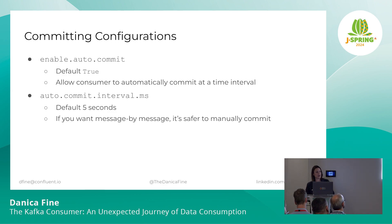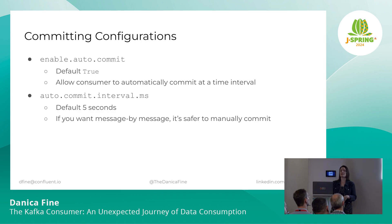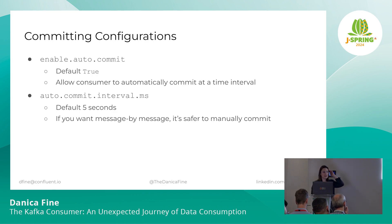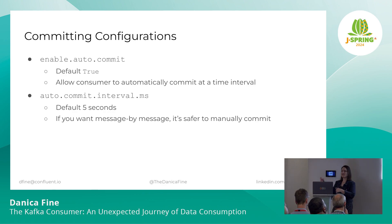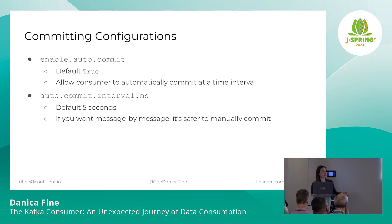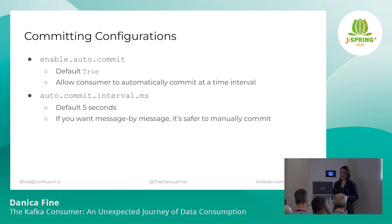As we are processing these fetched and then polled records, we should probably keep track of whether or not we've actually processed that record and made any progress, so that the next time a consumer comes online for this group for this topic partition, we know where we left off — and we do that with committing. Committing our offsets can be an automatic process; it is by default. When enable.auto.commit is set to true, behind the scenes an offsets handler commits our processed offsets every five seconds. You can change that commit interval using auto.commit.interval.ms. Keep in mind this commit interval is only time-based — there's no way to easily configure commit after every five records. If you want to guarantee that you commit after every record, you can manually commit your offsets using consumer.commit, but this would definitely kill your performance.